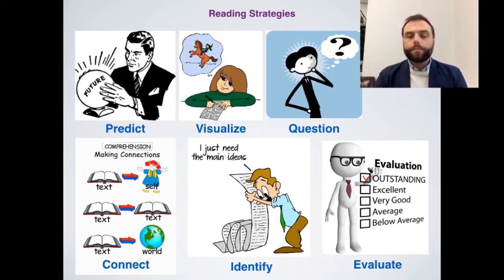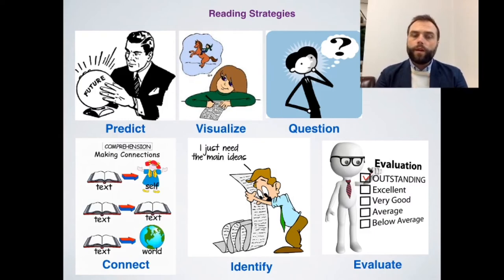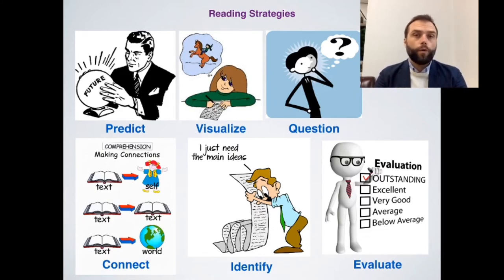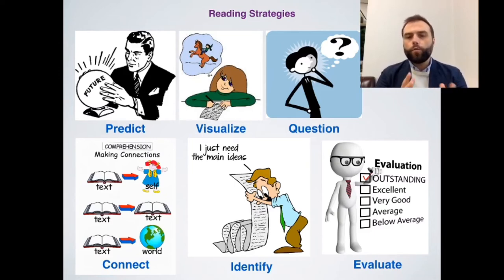The next strategy is identify. This could mean things like the main idea, the main parts of the story — the beginning, the middle and the end — identifying what changes, what is the problem, what is the solution. It could also mean identifying the argument being made, for example in a newspaper article there may be different sides or a bias in the text. For young learners, identifying could be very simple things like which part of the story is happy, which part is sad. There are different ways of identifying.